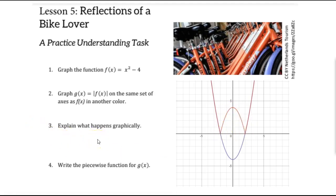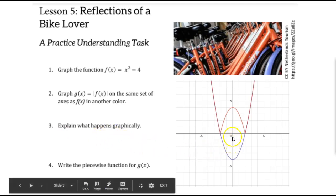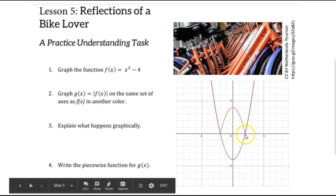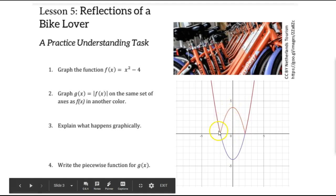Question three says explain what happens graphically. When we go back to our transformations and things we learned in math two, we learned that this shape is being reflected over the x-axis, but not the whole shape. Just the part of the shape that was below the x-axis, the part that was negative, has been reflected above the x-axis and has now been made positive. The parts that were already above the x-axis, the parts that were already positive, stayed positive because the absolute value of a positive number is a positive number.